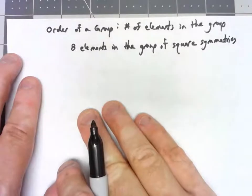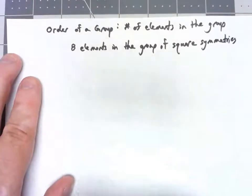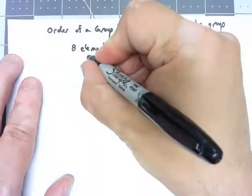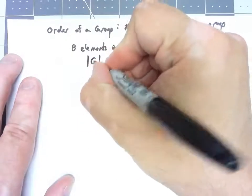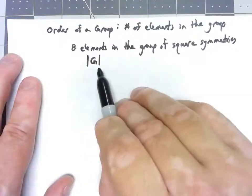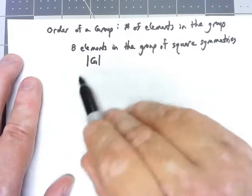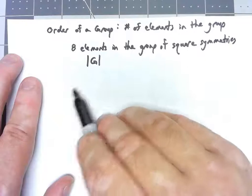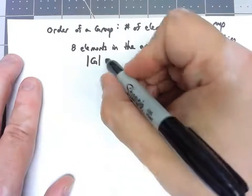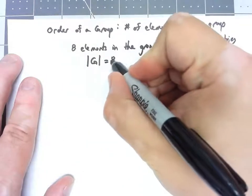So if we just call that group G, the notation we would use is that the order of G. We use the absolute value. It's used for many things, specifically like the size of a set, which is basically what this is. Eight elements in the group, the order of the group is equal to 8.